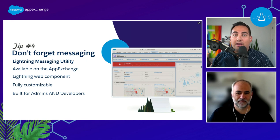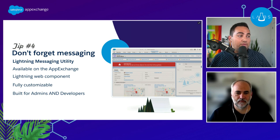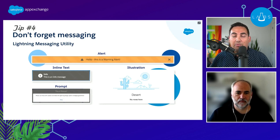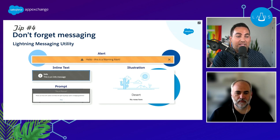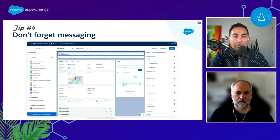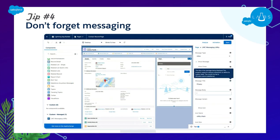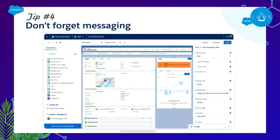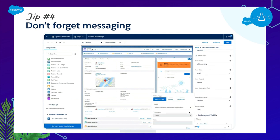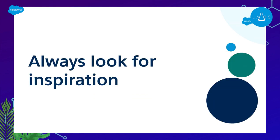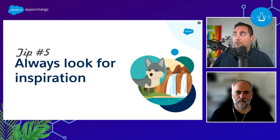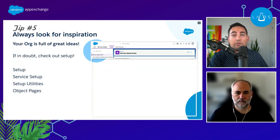To help with this, there's a Salesforce Labs app that we both created after building roughly two million of these messaging components — it's called the Lightning Messaging Utility and is available on the AppExchange. It allows you to quickly define a message and send it to your users through the UI. You can drag it right into App Builder, set properties like a title and variant, and display messages to users at the right time based on criteria you set.